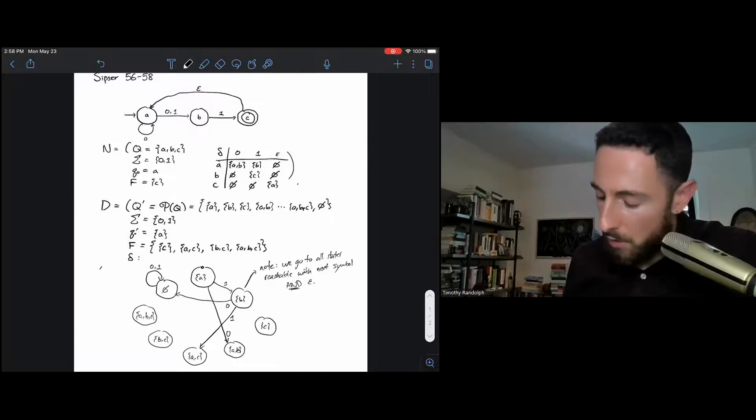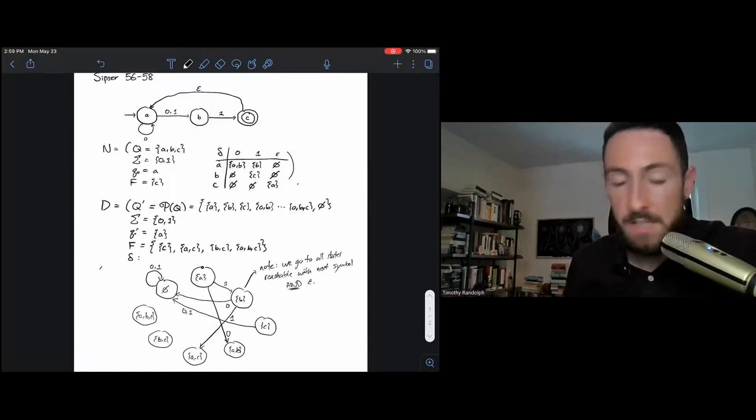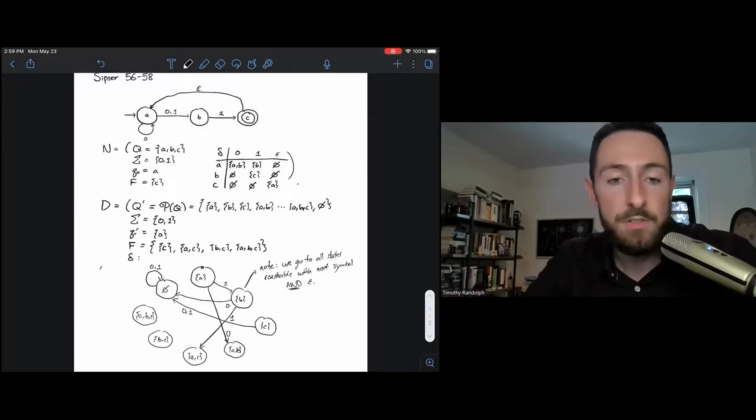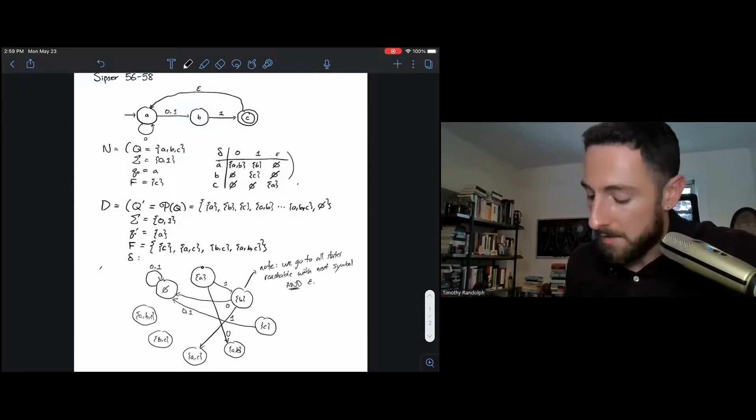Now from C, on a zero and a one, I'm going to go to the empty set. Now why am I not considering the epsilon transition? It's the same decision we were talking about before. I've decided to consider that epsilon transition in terms of what happens after I move to C from B, not before I move from C to someplace else. Arbitrary choice, but it'll keep us consistent to consider moving from C without the epsilon transition.